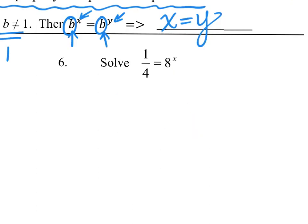Now if we look at number six, again I'm trying to see if we can make the bases match each other. When I look at the number one fourth, I know four is two to the second power. If we look at the right side of the equation, we have the number eight — that's two times two times two, so eight is two to the third power. So I'm just rewriting the eight, still with the same exponent. Then we rewrite one fourth as one over two squared. But the bases still aren't exactly the same because we have this fraction.